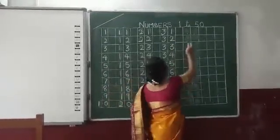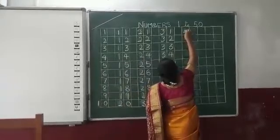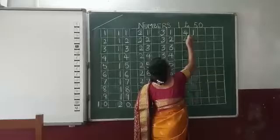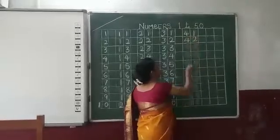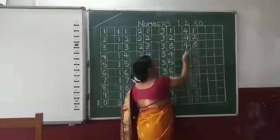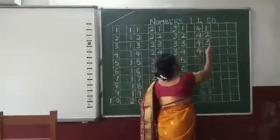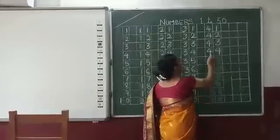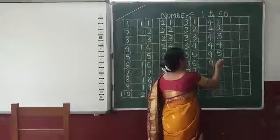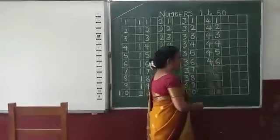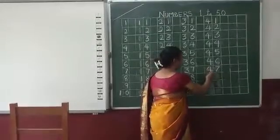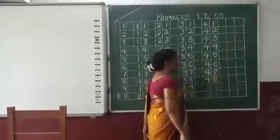Again leave one line in between and start 41. 4, 1, 41. 4, 2, 42. 4, 3, 43. 4, 4, 44. 4, 5, 45. 4, 6, 46. 4, 7, 47. 4, 8, 48.